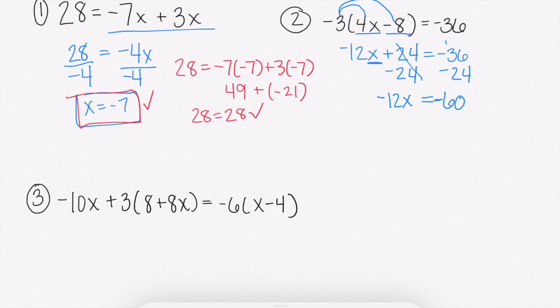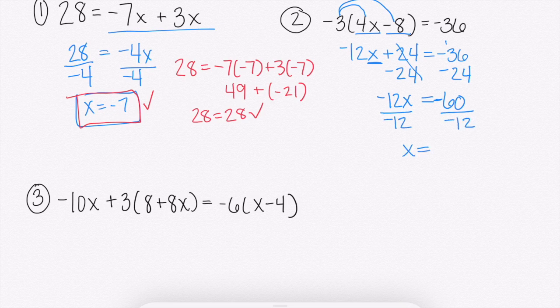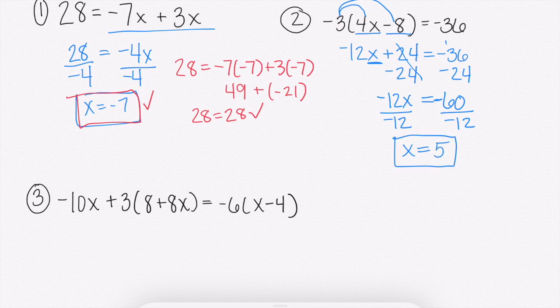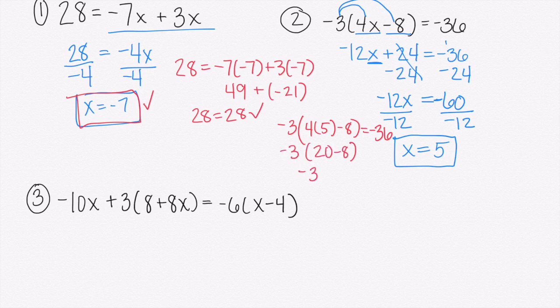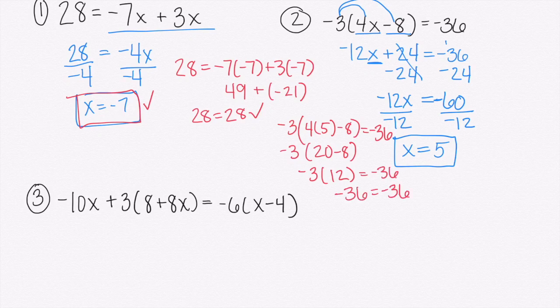And then from here, it's a one-step equation. How do we get rid of negative 12 times x? We divide. A negative 60 divided by a negative 12 would get us a positive 5. Again, we are going to check that. And I got negative 36 on both sides. So that means x equals 5 does work, and that is the correct answer.